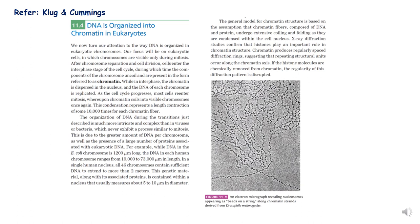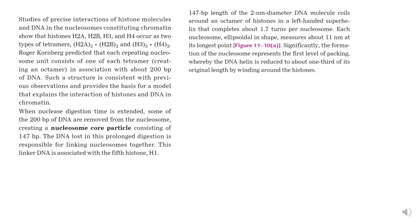You can refer to many books of genetics to understand this topic. This picture from Klug and Cummings is a very good genetics textbook. Here you can see an electron micrograph revealing nucleosomes appearing as beads on a string from Drosophila melanogaster. It looks like a beaded structure — you could say it is like a necklace of beads. The bead is the core particle of the nucleosome and the linker consists of H1 protein plus 60 base pairs of DNA. Klug and Cummings also describes H2A, H2B, H3, and H4 histone proteins.